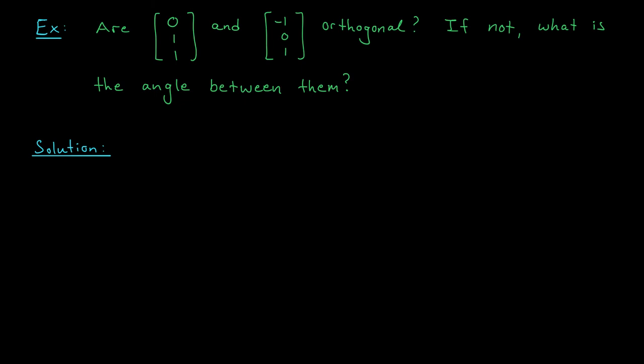Okay, well, let's think back to our definition. What does it mean to be orthogonal? Well, two vectors are orthogonal if their dot product is 0. So let's compute the dot product. The dot product of 0, 1, 1 and minus 1, 0, 1 is 0 times minus 1 plus 1 times 0 plus 1 times 1. Ah, it's 1. It's not 0.